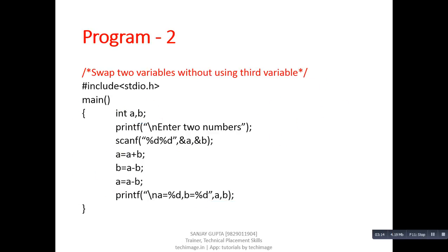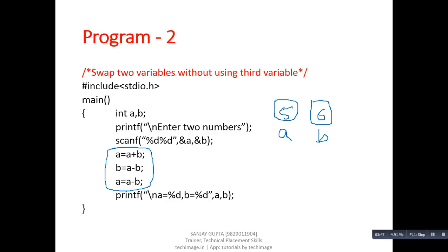This is program number two: swap two variables without using a third variable. These three statements implement this logic. Again, let's understand with an example. There are only two variables: A contains 5 and B contains 6. The first step is A equals A plus B, so the sum is 11 and the current value of A becomes 11. The second step is B equals A minus B, so 11 minus 6 equals 5, and B becomes 5.